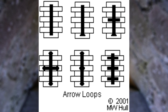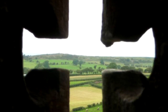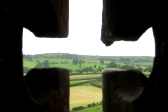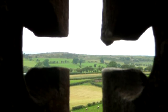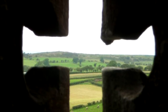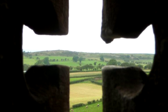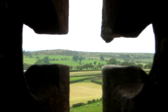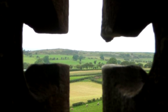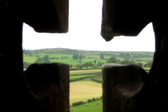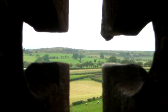Apart from the basic vertical slit, another common shape is a cross. This additional horizontal slit was to give the archer a better field of view so they could scope out the area before using the vertical slit to shoot their arrows through.